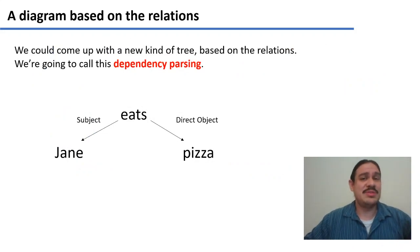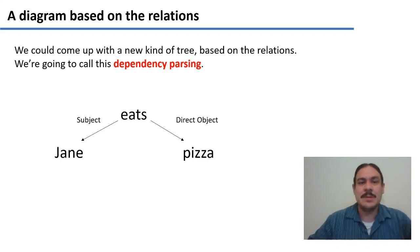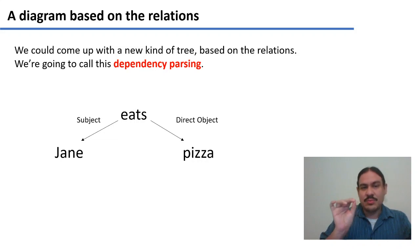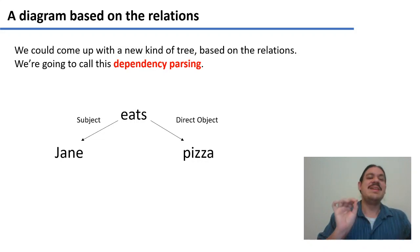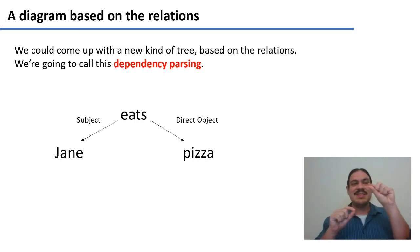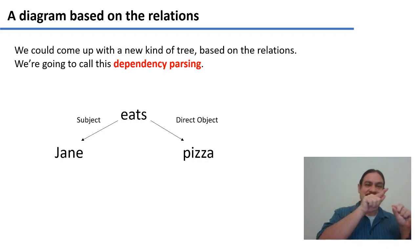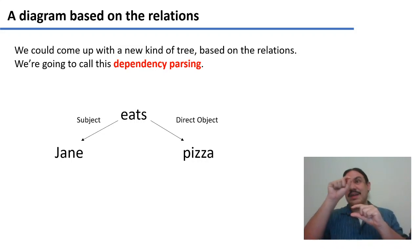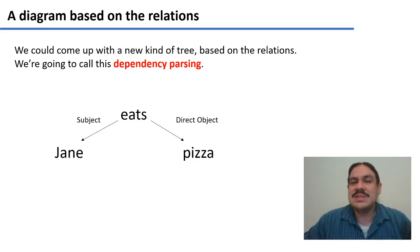How about if we build a more direct tree — one that just tells us the dependency relationships, which we're going to call relations? Maybe we could have the sentence 'Jane eats pizza' and connect the word 'eats' with 'Jane' using a connection called subject, and connect 'eats' with 'pizza' using a connection called direct object. So out of 'eats' goes one arc directed towards Jane (subject), and another arc going to pizza (direct object). We're going to call this kind of parsing dependency parsing.